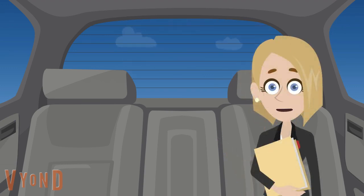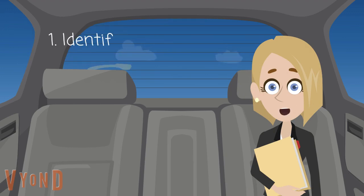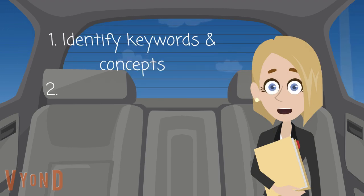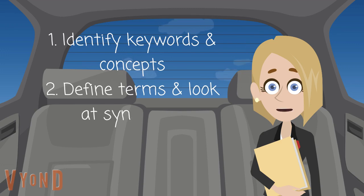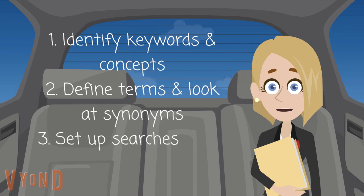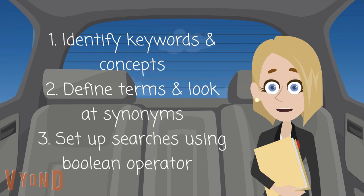There are three key components to a search strategy. First is to identify keywords and concepts, then define terms and look at synonyms, and the last step is setting up searches using Boolean operators.